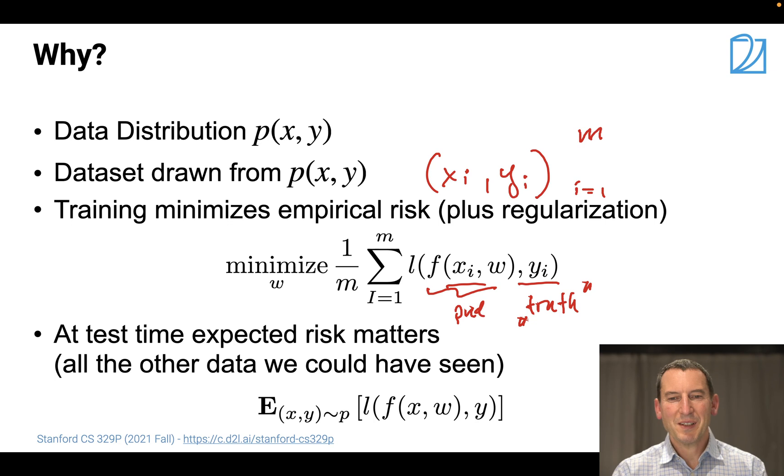Now at test time, what matters is actually the expected risk. In other words, here I have some (x,y) pairs drawn from the true distribution, then I have this loss l(f(x,w), y). You might say, what about if we are given the test data explicitly? Well then you actually have a transduction setting. In that case the math is a little bit more interesting, but the issue is similar.